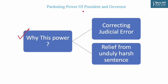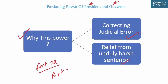Why have these powers been provided to the President and Governor? The objective is twofold: first, to keep the door open for correcting any judicial error in the operation of law; and second, to afford relief from a sentence which the President or Governor regards as unduly harsh. Article 72 deals with the pardoning power of the President, whereas Article 161 deals with the pardoning power of the Governor.